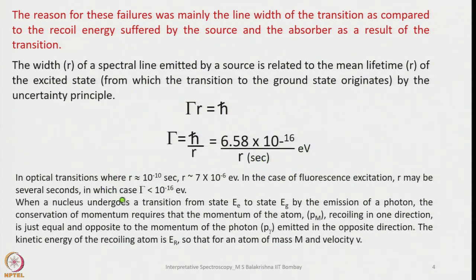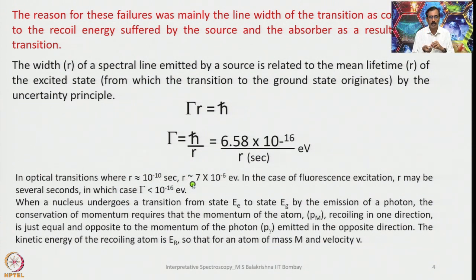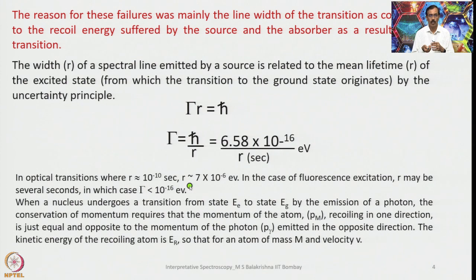In optical transitions where τ equals 10⁻¹⁰ seconds, Γ is approximately 7 × 10⁻¹⁶ electron volts. In the case of fluorescence excitation, τ may be several seconds, in which case Γ is less than 10⁻¹⁶ electron volts.